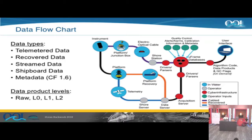The data waits for someone to make a request, so the data is processed on demand. When somebody goes to the site and requests a specific data product, it gets run through algorithms that apply the calibration information, attach metadata from the database, quality control flags are applied, and then it gets delivered in NetCDF or CSV format to the user on their interface.